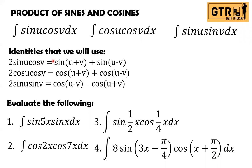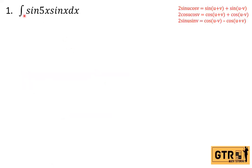So therefore we have sin(u)cos(v) equals one half times the quantity of that expression. Try to solve the four examples — screenshot first and then try to solve before watching my solution. Let's start number 1: the integral of sin(5x) times sin(x) dx.